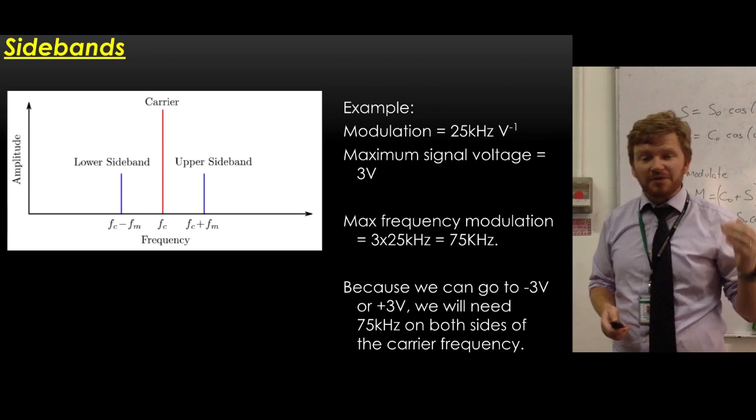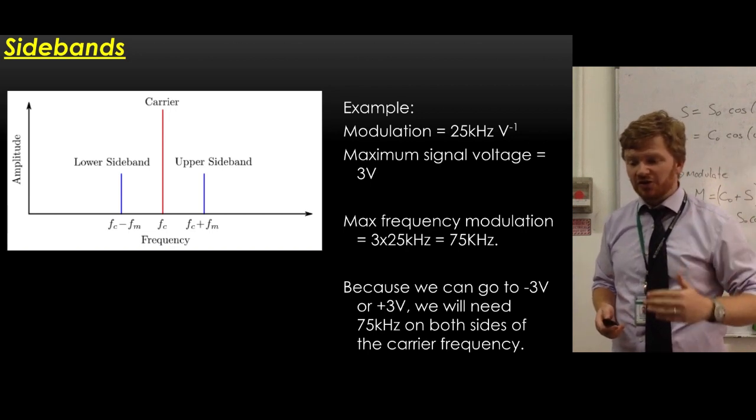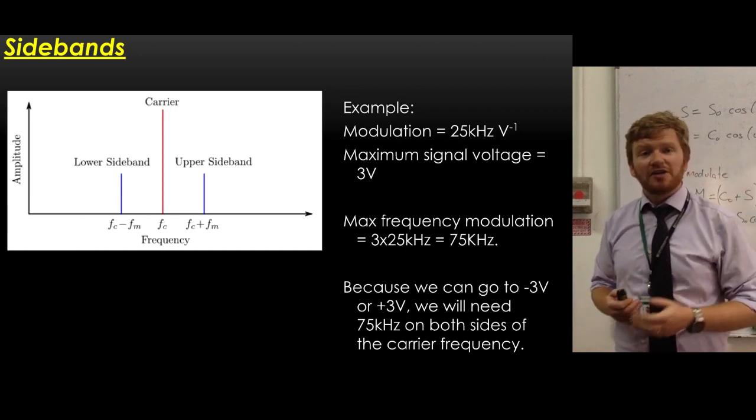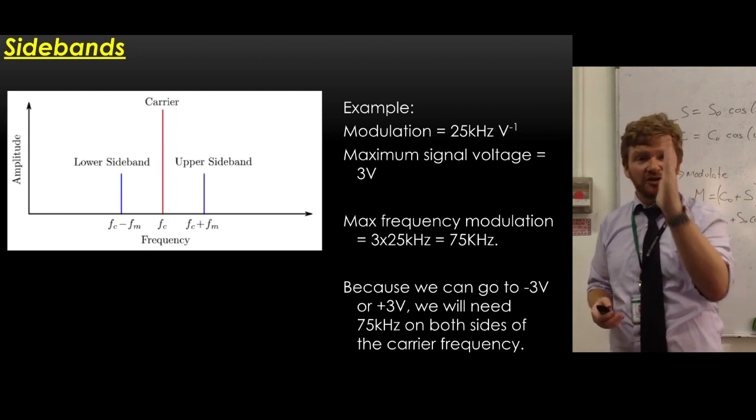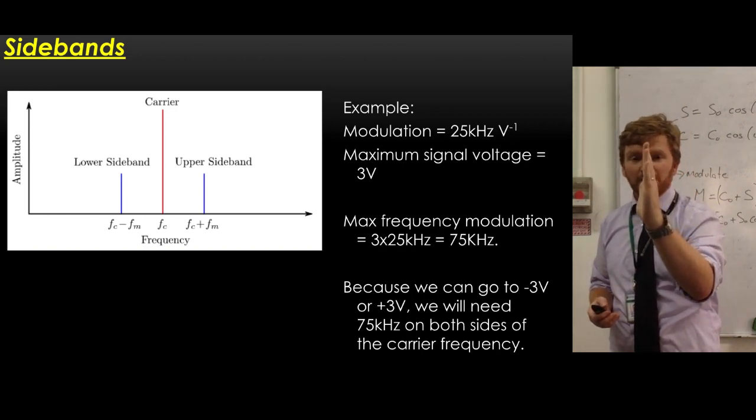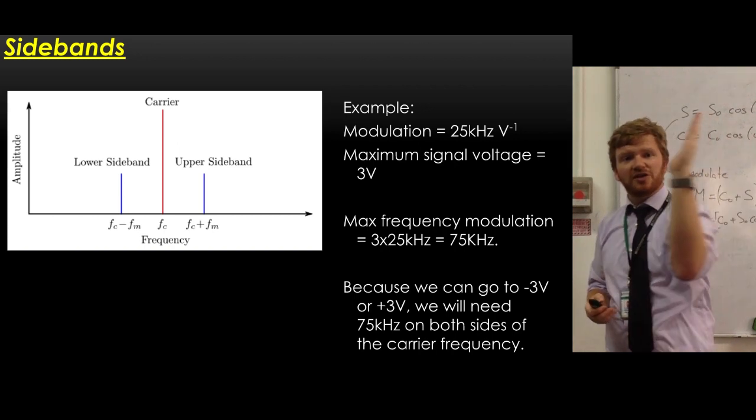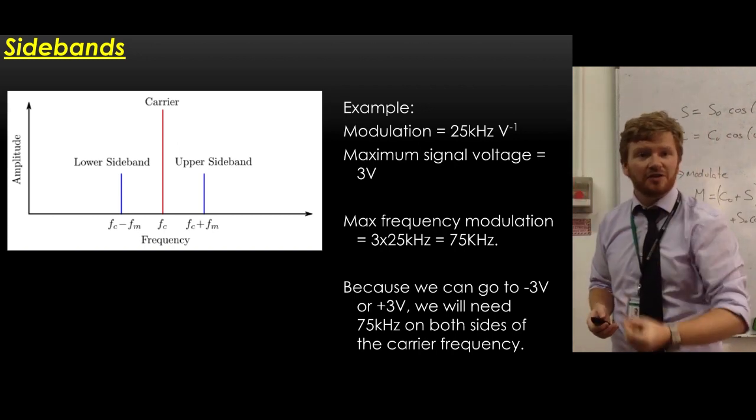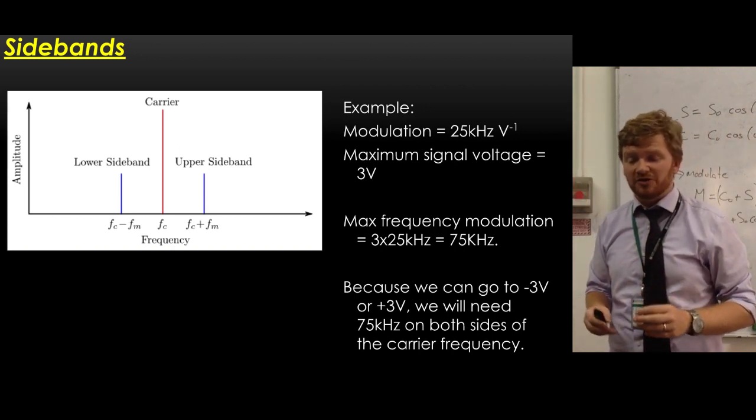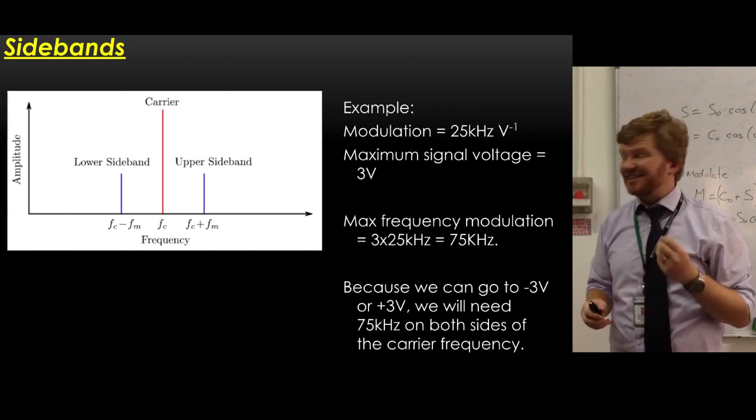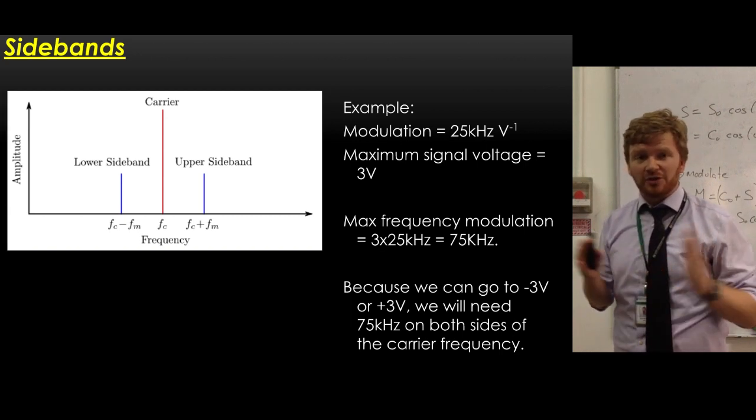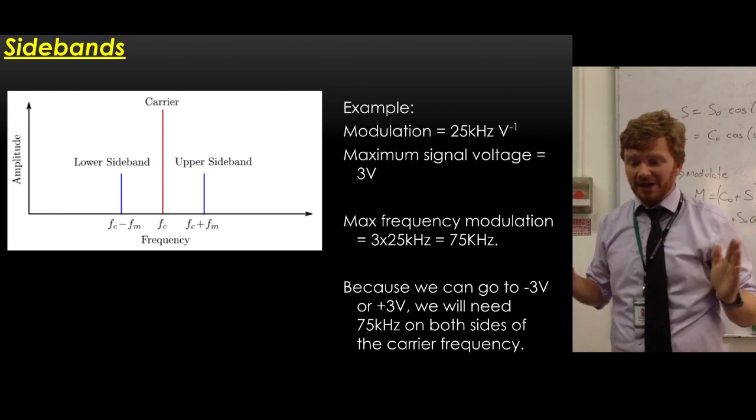What does that mean? Now, because our signal can go plus or minus three volts, that means that I'm going to need my carrier frequency right in the center. And then I will need 75 kilohertz on one side and 75 kilohertz on the other side. I will need both of those frequencies in order to be able to get an output that's reasonable. So I'll need to use up all those bands.